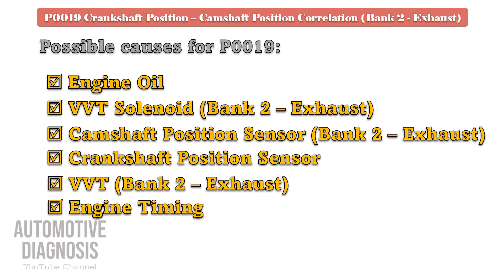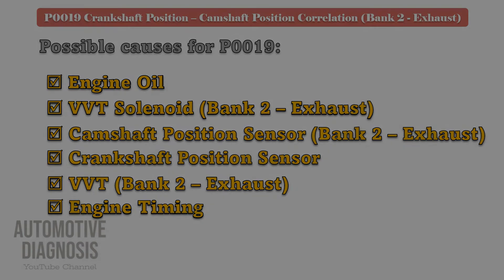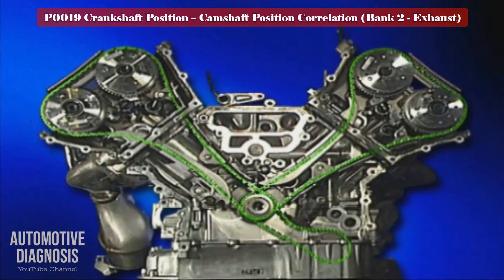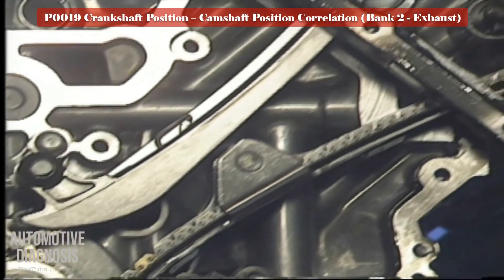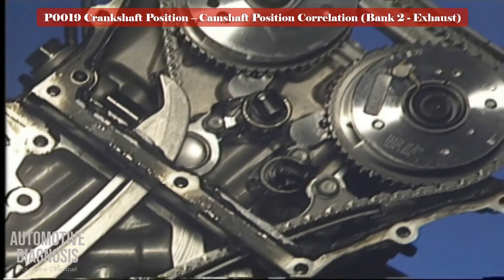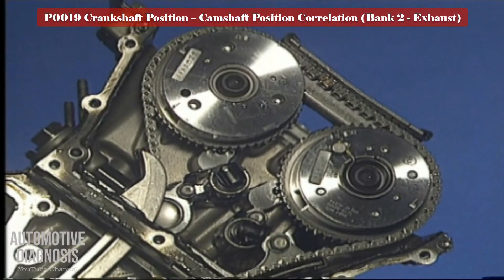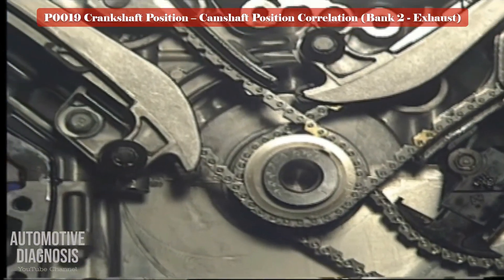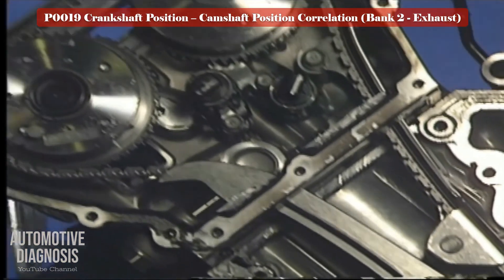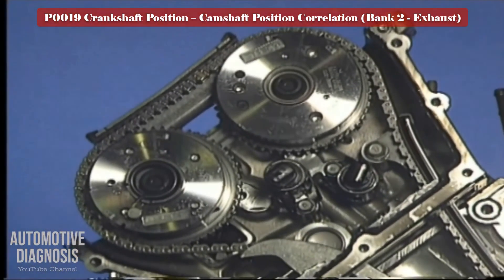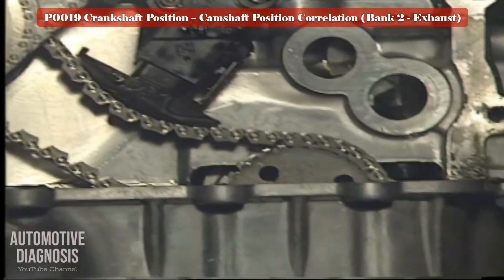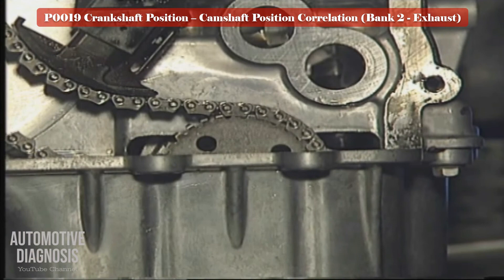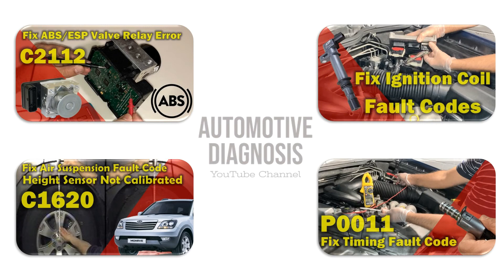If the VVT was okay, the last step is to check the engine timing. If the engine timing is not correct or the timing chain is extended, you may have this fault code. Since you have already removed the camshaft, check the timing chain and adjust the engine timing. Thank you for watching the video — please don't forget to subscribe and share if you enjoyed the information, and visit the channel page for more videos like this.